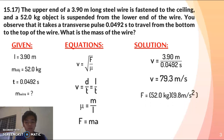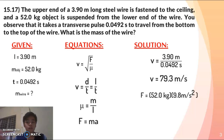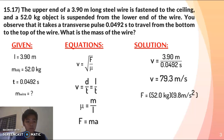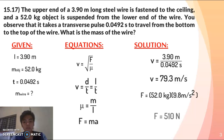With our velocity found, we can get our force. Since the object is suspended, the acceleration is gravity, so the force is gravitational: 52 kilograms times 9.8 meters per second squared, which gives us a force of 510 newtons.